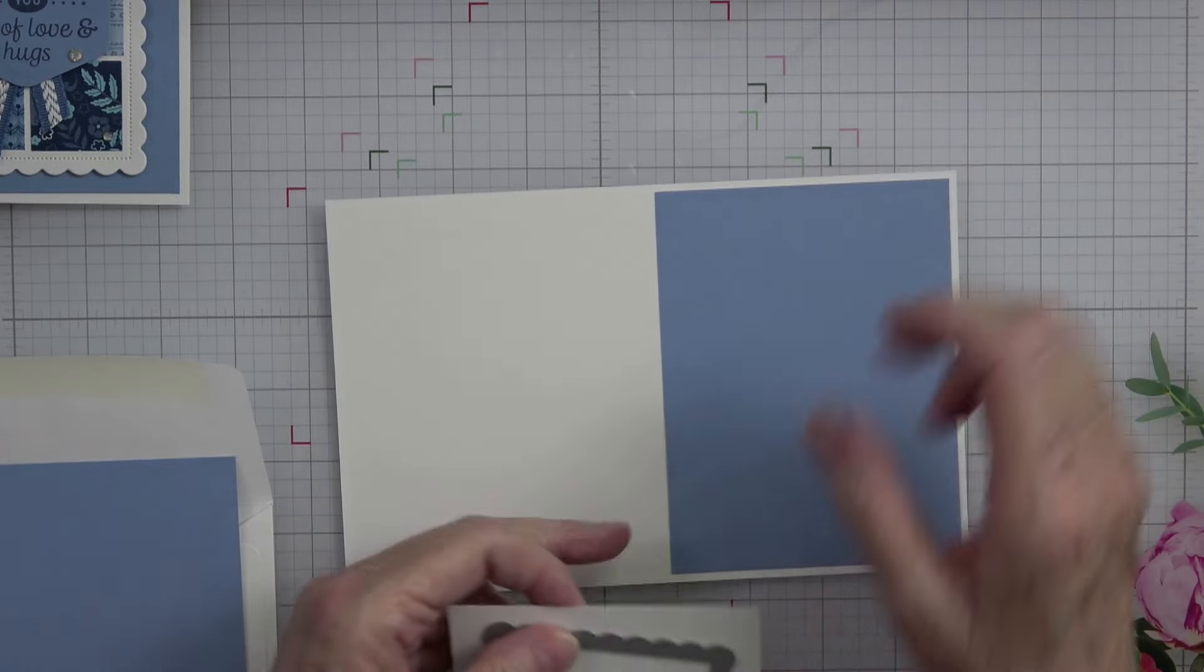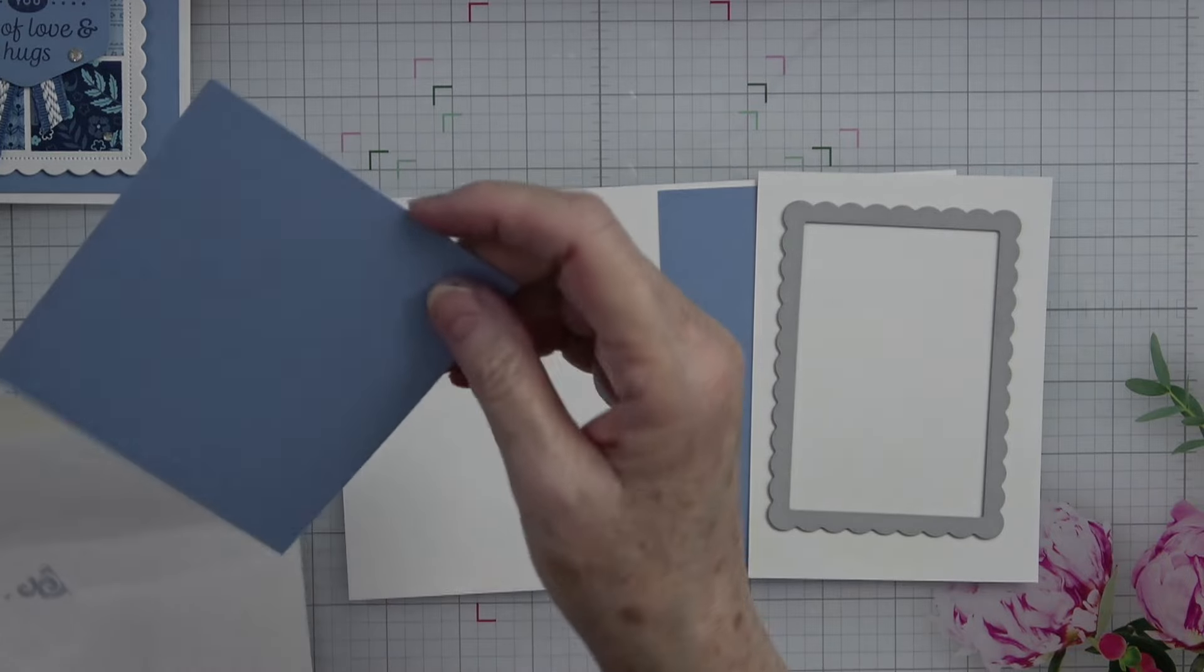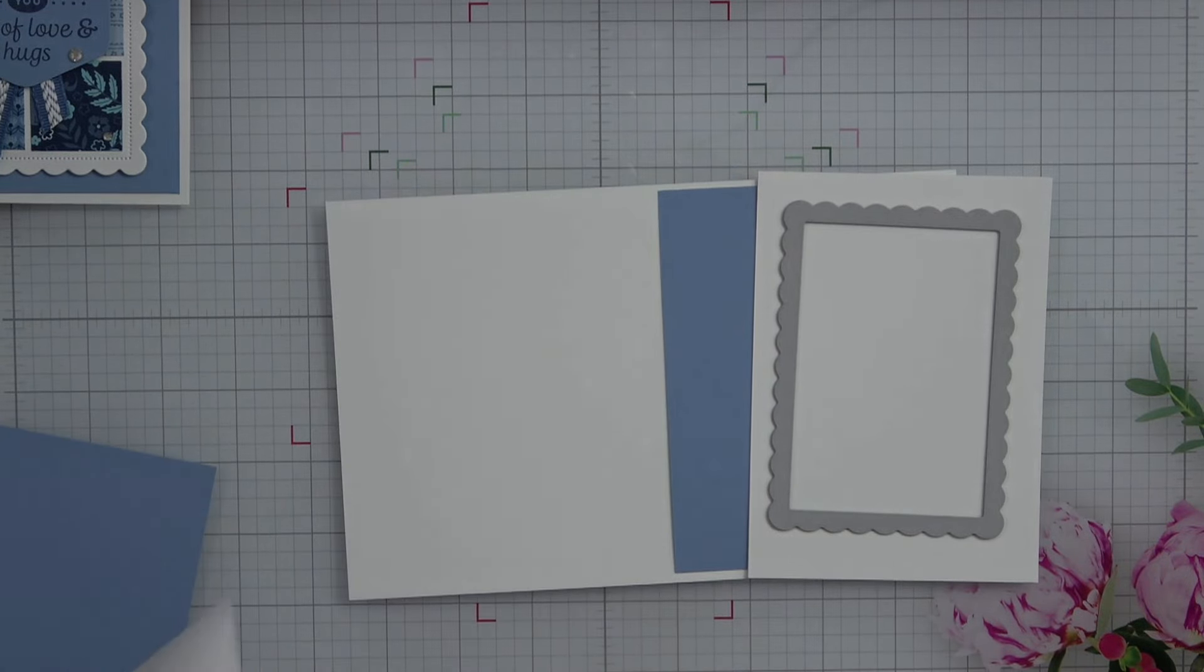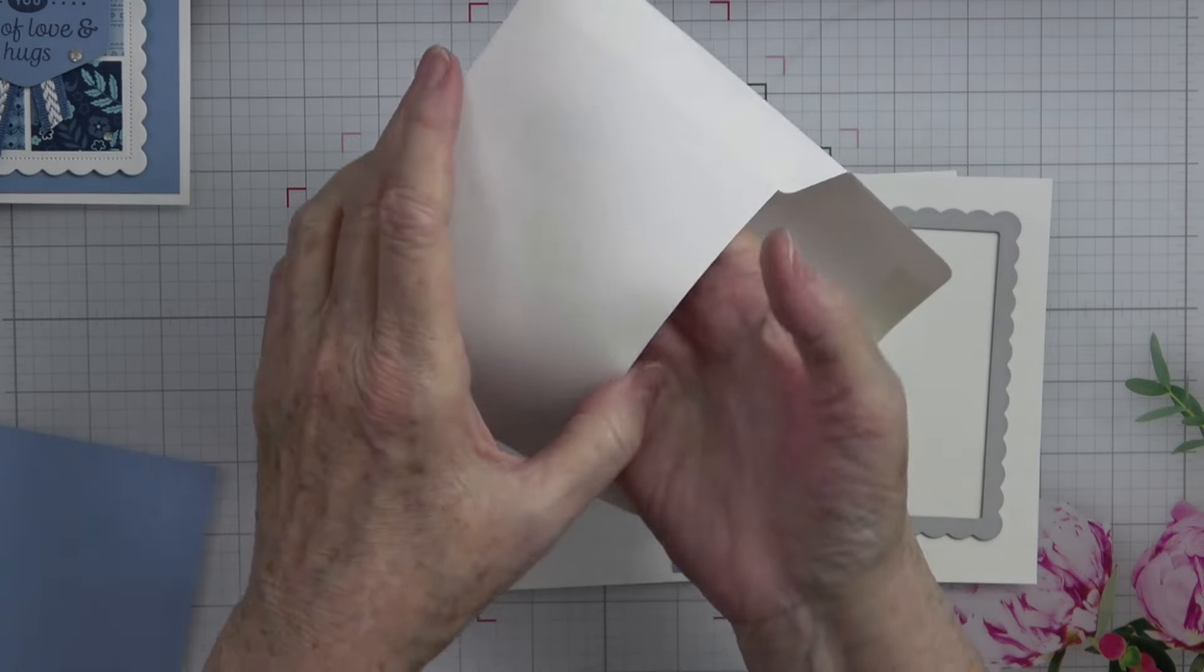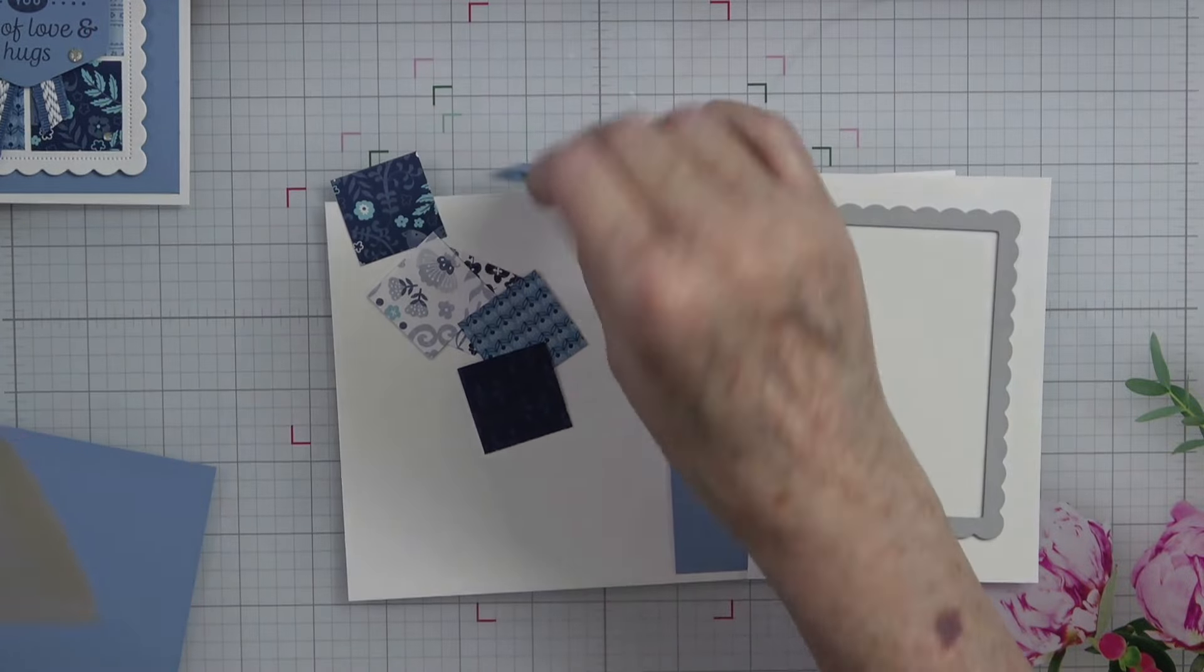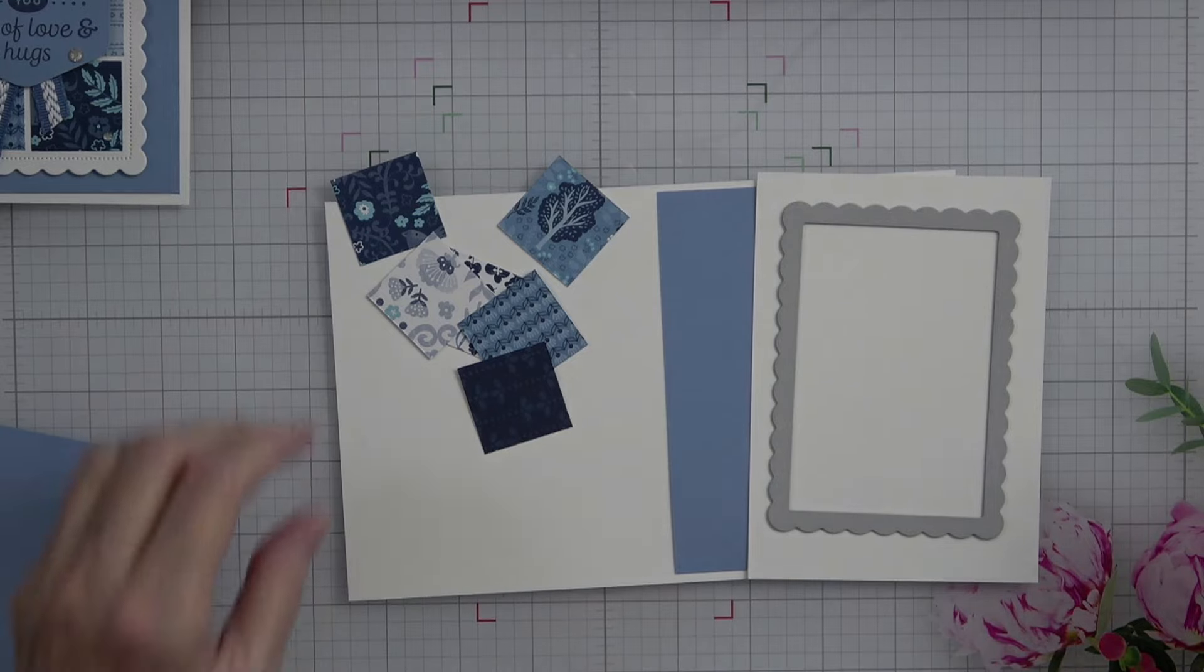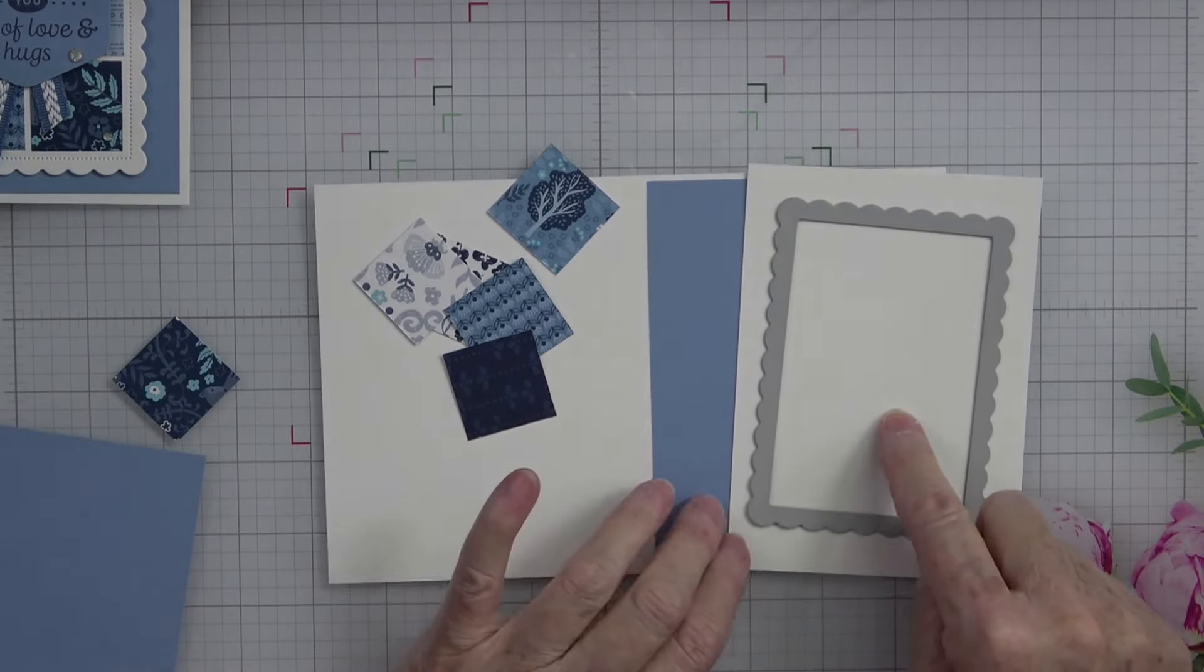This is cut four by five and a quarter and that's going to actually be our front mat on our card. And then we're going to cut this and we're going to cut out of our Countryside Inn. I had a bunch of scraps left over and what I did is I cut six tiny little squares.